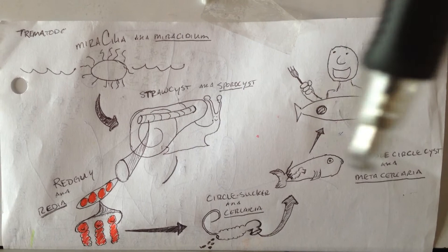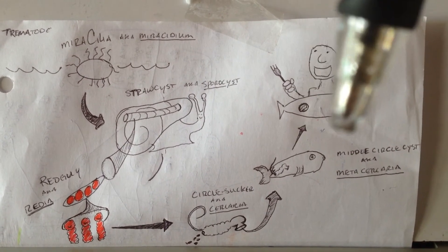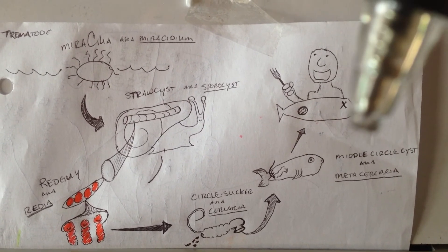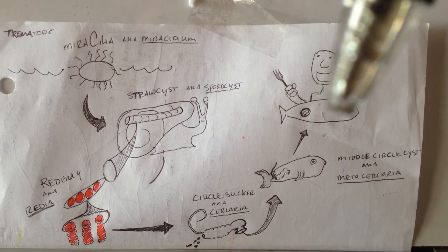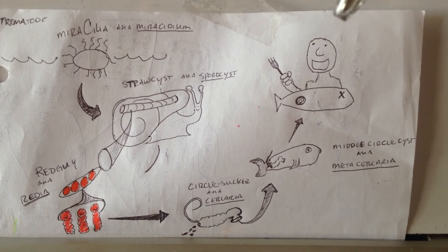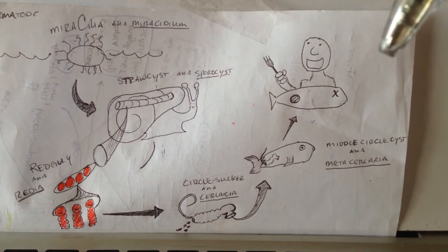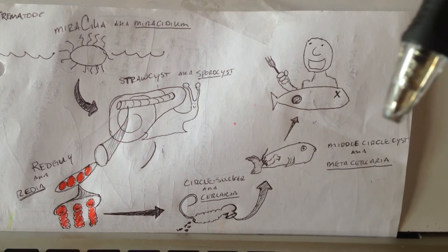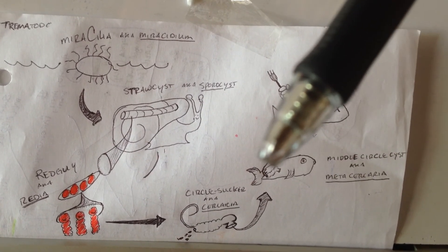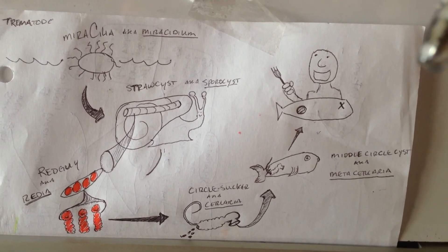From here then we go to the metacercaria, or the middle circle cyst. I called it the middle circle cyst because it's kind of in between the infection of humans and the stage where it can affect them. You should know that the metacercaria is the only one that can affect humans. There's a little bolt here chopping off the tail — so when they go into their cyst, their tail falls off and then they're in a cyst, inside a fish.